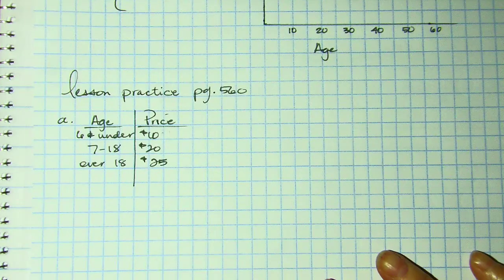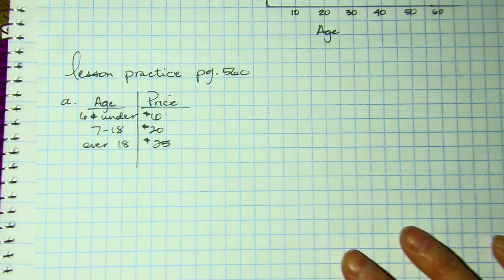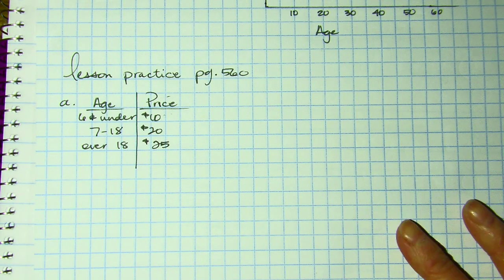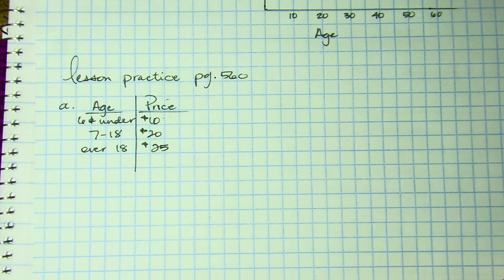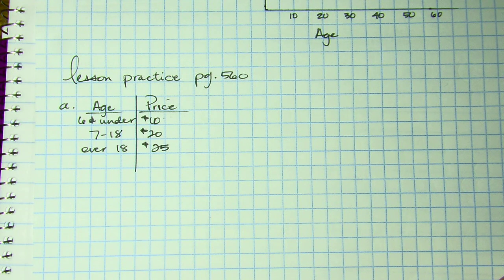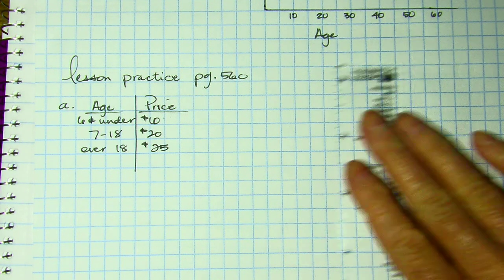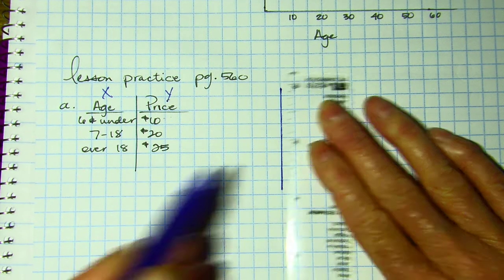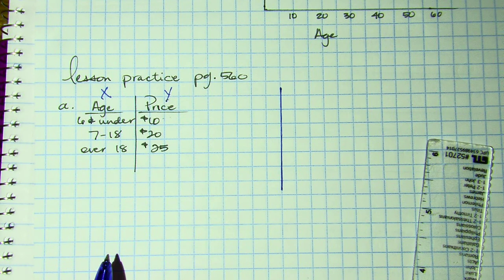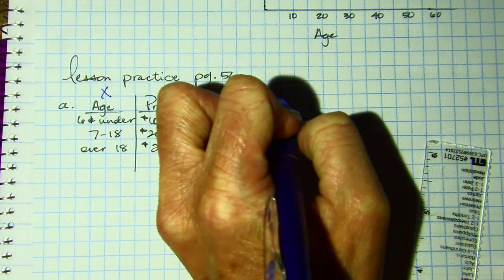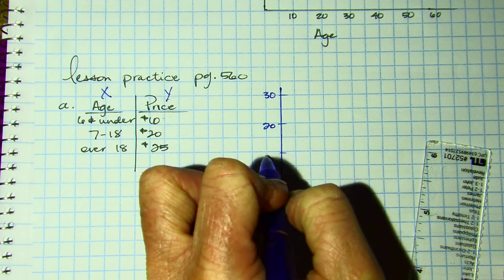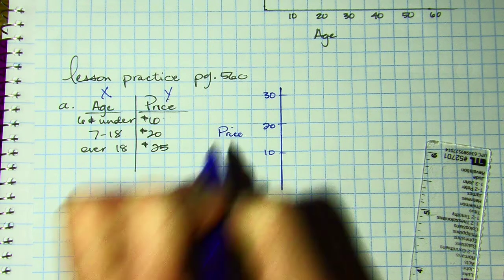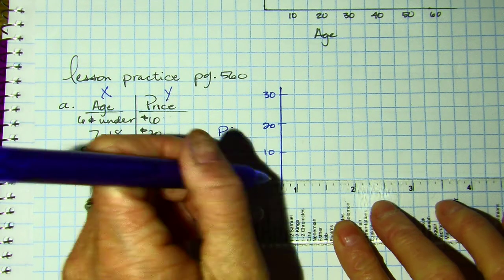Let's try one in our lesson practice on page 560. They've given us information based on an amusement park and would like us to graph the piecewise function showing the admission cost for someone X years of age. I'm going to set up axes — this is X, this is Y. My prices are 10 to 25, so I'll go 10, 20, 30 on the left for price, and on the bottom I'll have age.